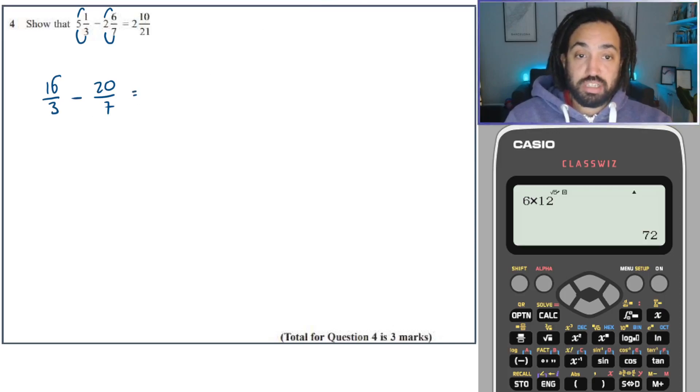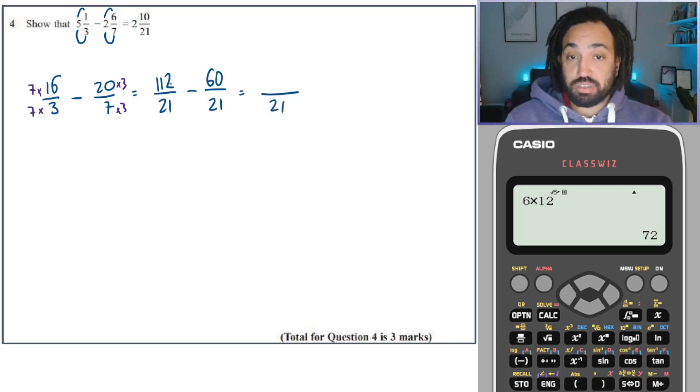Right. What's the lowest common denominator? Well, 3 and 7 is 21. So we write 21 and 21. What have I got to times this one by? Well, 7. And I've got to times this one by 3. Okay, 7 times 16 is 70 plus 42, which is 112. And 20 times 3 is 60. Okay, next we keep the denominator the same and we subtract.